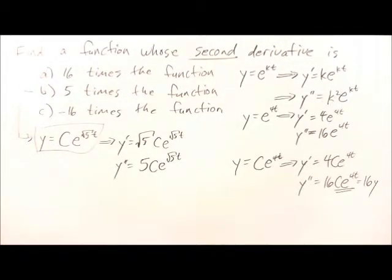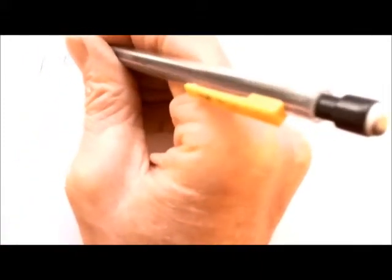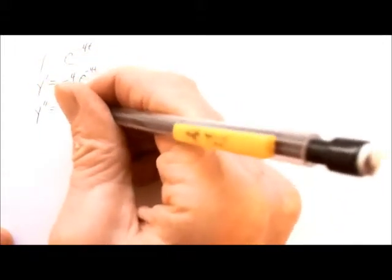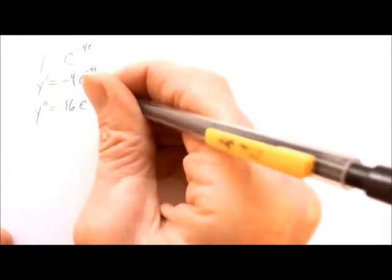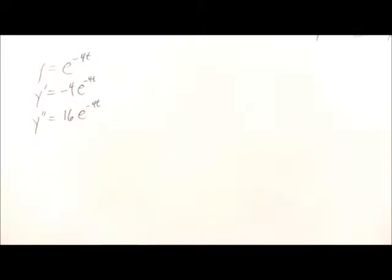Now let's look at part C, where we want a function whose second derivative is negative 16 times the function. We might guess y equals e to the minus 4t. The first derivative would be negative 4 e to the minus 4t. But when we take the second derivative, negative 4 times negative 4 gives positive 16 e to the minus 4t. We want negative 16, so this function is not going to work.